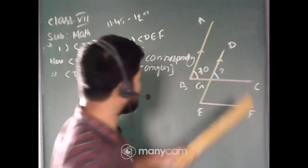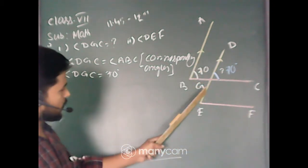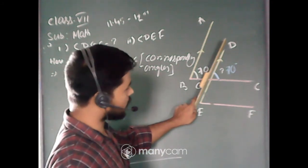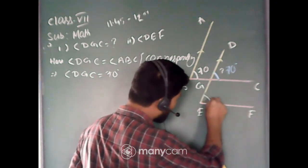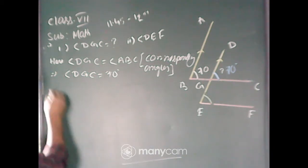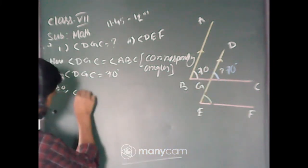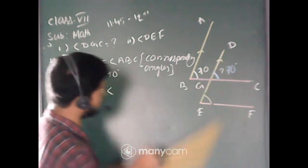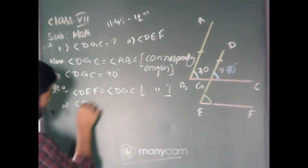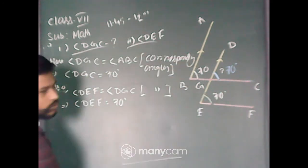Now we'll calculate the value of angle DEF. Here, BC and EF are two parallel lines and DE is the transversal. One is the interior angle and one is the exterior angle on the same side of the transversal, so they are also corresponding angles. Angle DEF is equal to angle DGC, because they are also corresponding angles. That means angle DEF is equal to 70 degrees. So this angle is 70 degrees and this is also 70 degrees. Completed.